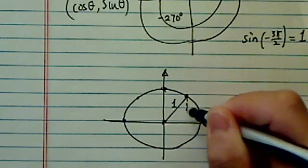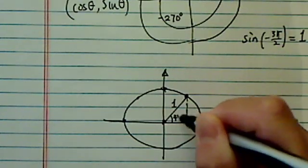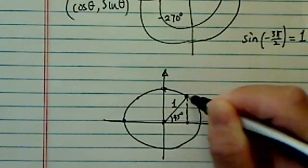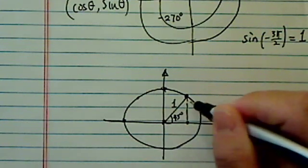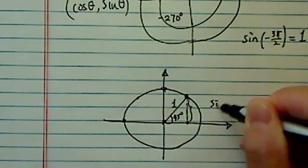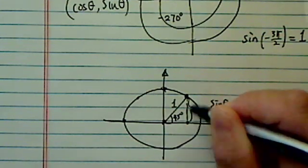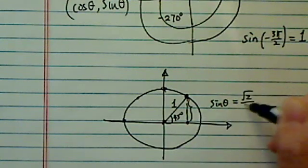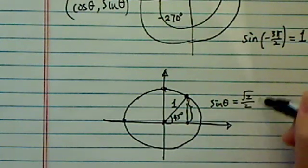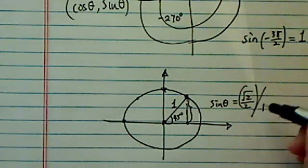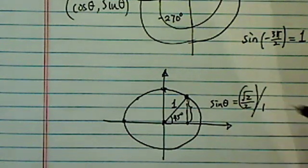One unit over here, here's my 45 degrees. And you're looking at the sine theta is whatever you're looking at, which happens to be radical 2 over 2, over 1. So this is the opposite over hypotenuse.